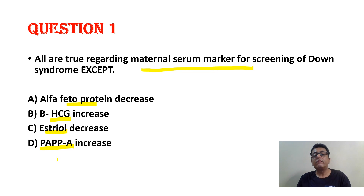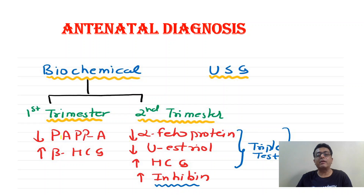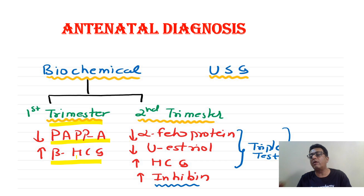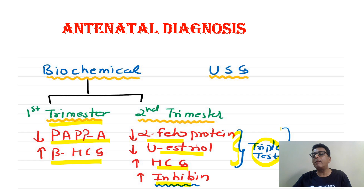So we just make a concept. This type of question comes regularly in exam — which increase, which decrease. These are the biochemical markers for detection of Down syndrome. In first trimester, we use PAPPA and beta-HCG. In second trimester, we use alpha-fetoprotein, estriol, HCG, and inhibin. If we consider the first three, this is the triple test. If we add inhibin, it becomes the quadruple test.